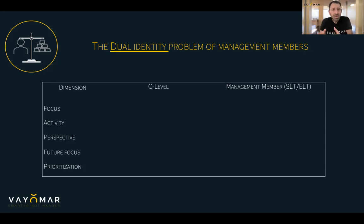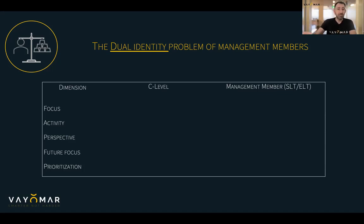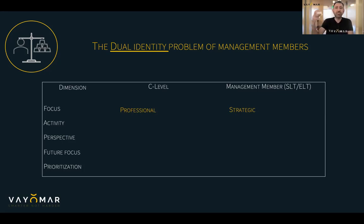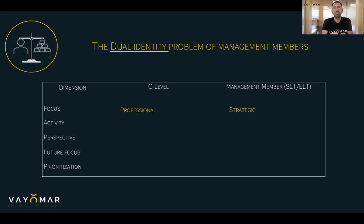Management members almost always carry an additional responsibility, which we call the C-level responsibility. We call it C-level because predominantly this comes from our work with leadership teams that report to the CEO. But C-level could be a placeholder for the additional professional responsibilities these people have — whether reporting to the country manager, regional manager, or general manager. One identity is defined by their professional responsibility: Chief of HR, Chief of Product, Chief of Marketing. The C-level title usually is 'Chief of something,' and that something pertains to a very specific professional domain within the company.